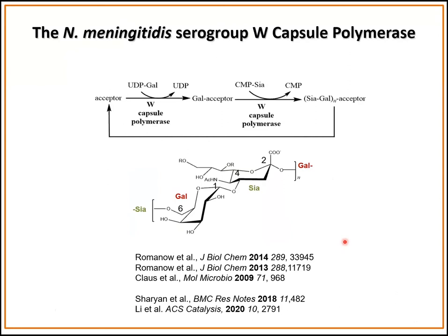My group, as well as the group of Chai Chen at UCSD, also performed studies to look at the kinetics of this enzyme. The capsule polymerase is a three-domain protein that catalyzes this reaction. In the presence of an acceptor, the enzyme takes galactose from UDP-galactose and adds it to the acceptor. That same single enzyme can then use the nucleotide donor sugar CMP sialic acid and add it to make our heteropolymer containing sialic acid and galactose linked in an alpha-1,4 fashion, with the repeating unit connected through an alpha-2,6 linkage.